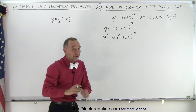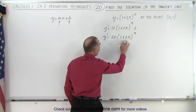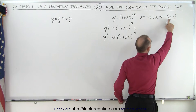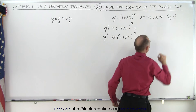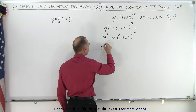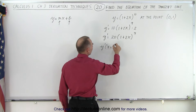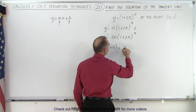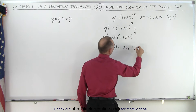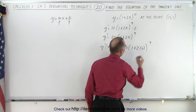That is the derivative of the function as a function of x. Now we need to find the derivative at this particular point when x is equal to 0. So we can say that y prime, when x equals 0, is equal to 20 times (1 plus 2 times 0) to the 9th power.